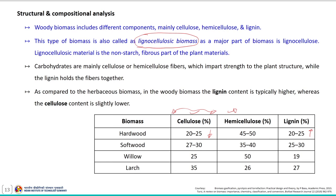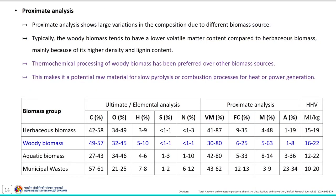Carbohydrates — mainly cellulose and hemicellulose fibers — impart strength to the plant structure while lignin holds these fibers together. Compared to herbaceous biomass, in woody biomass the lignin content is typically higher, whereas the cellulose content is slightly lower. The proximate analysis shows large variation in composition due to variation in species. Typically, woody biomass tends to have lower volatile matter compared to herbaceous biomass, mainly because of its higher density and lignin content. Hence, woody biomass is preferred for thermochemical conversion processing.